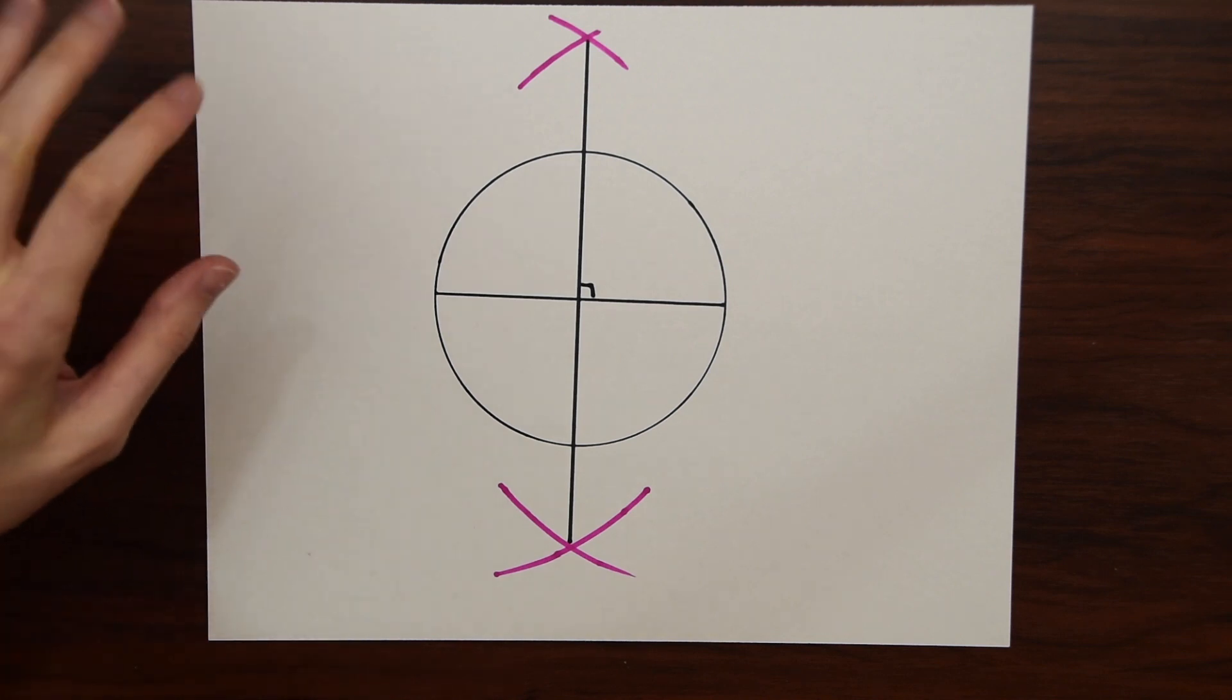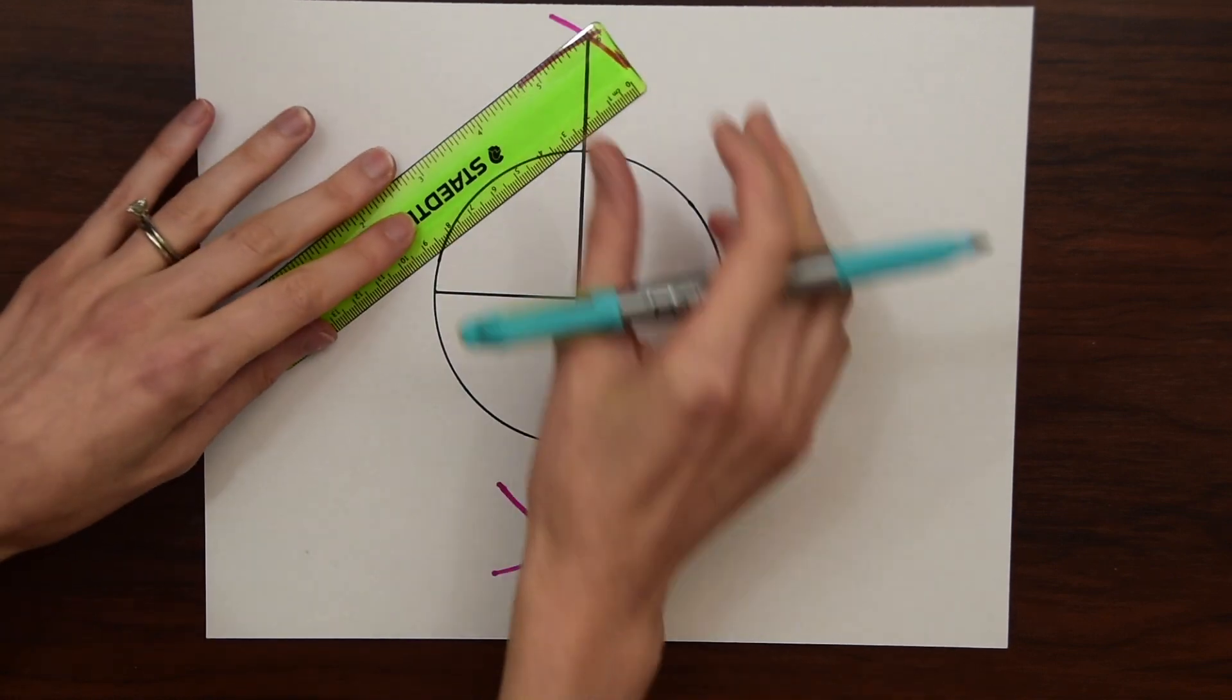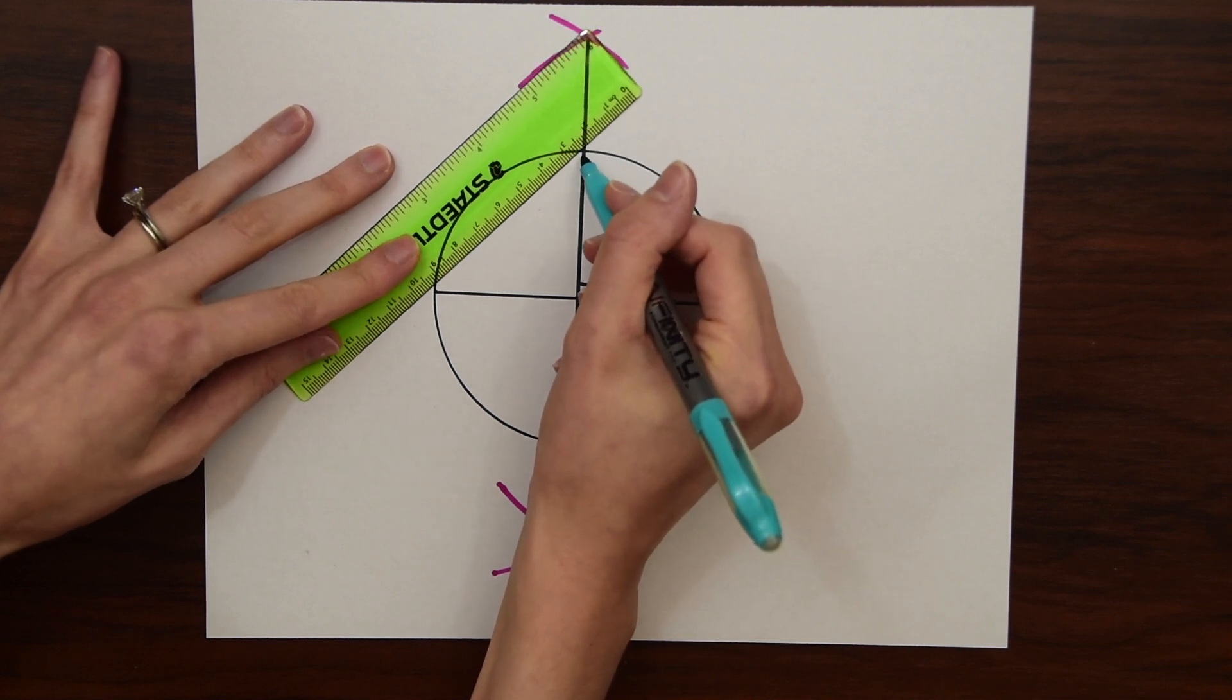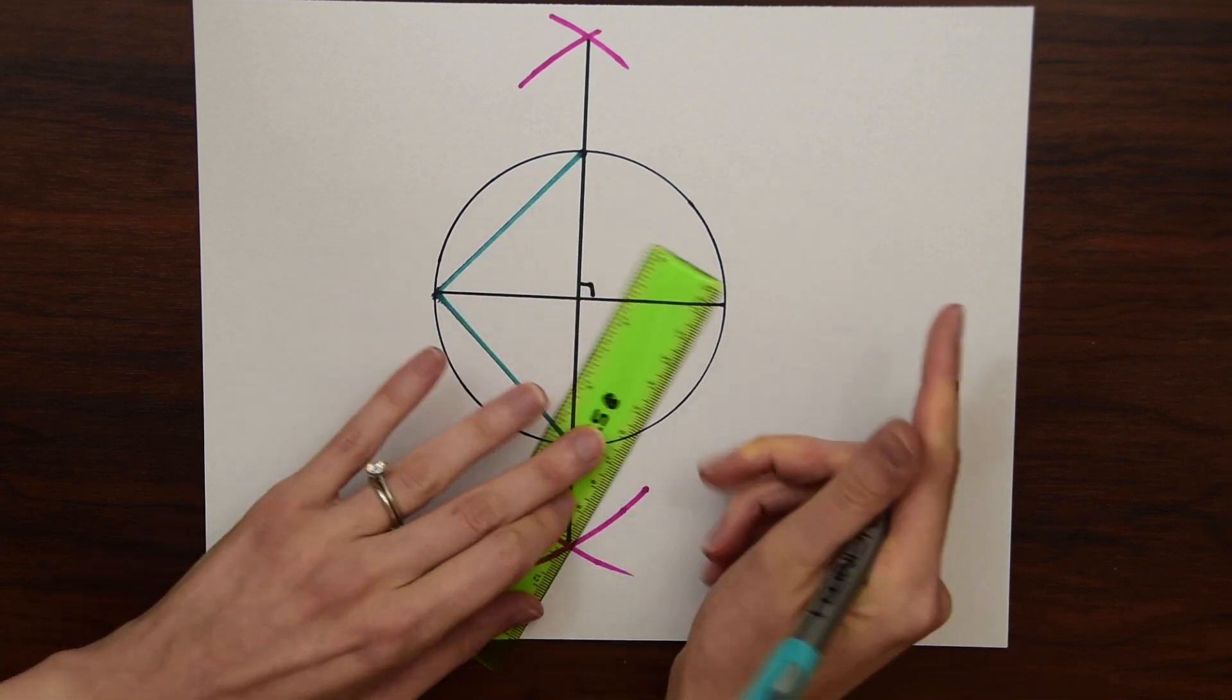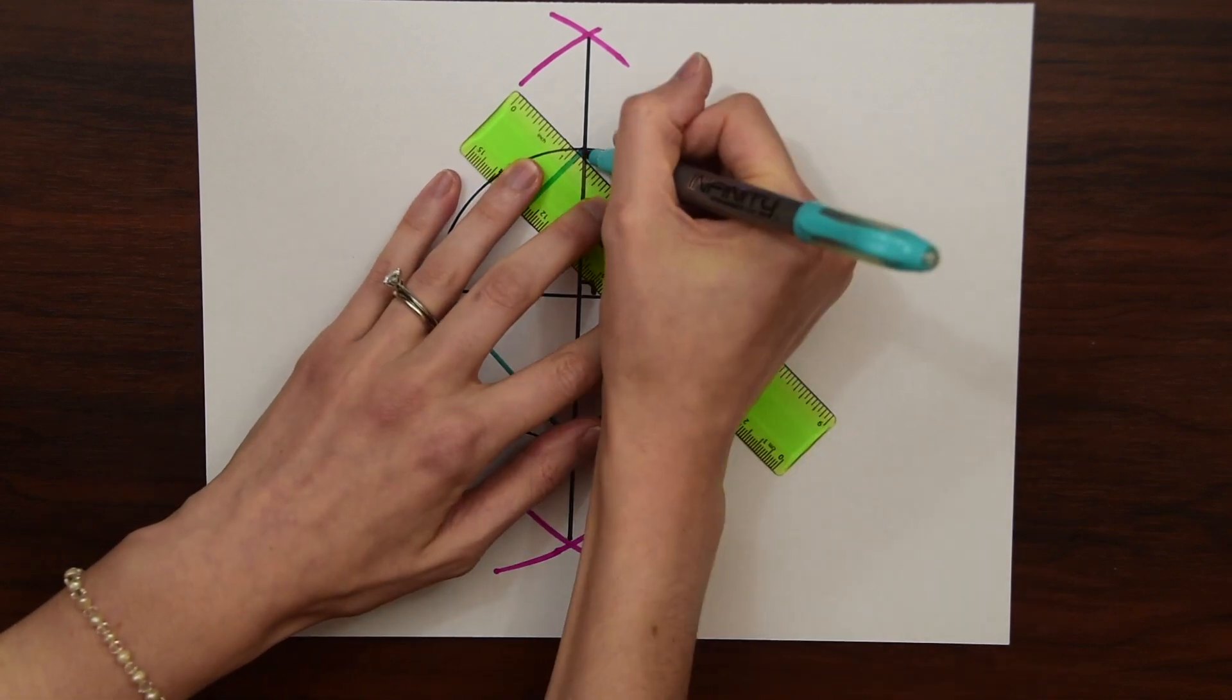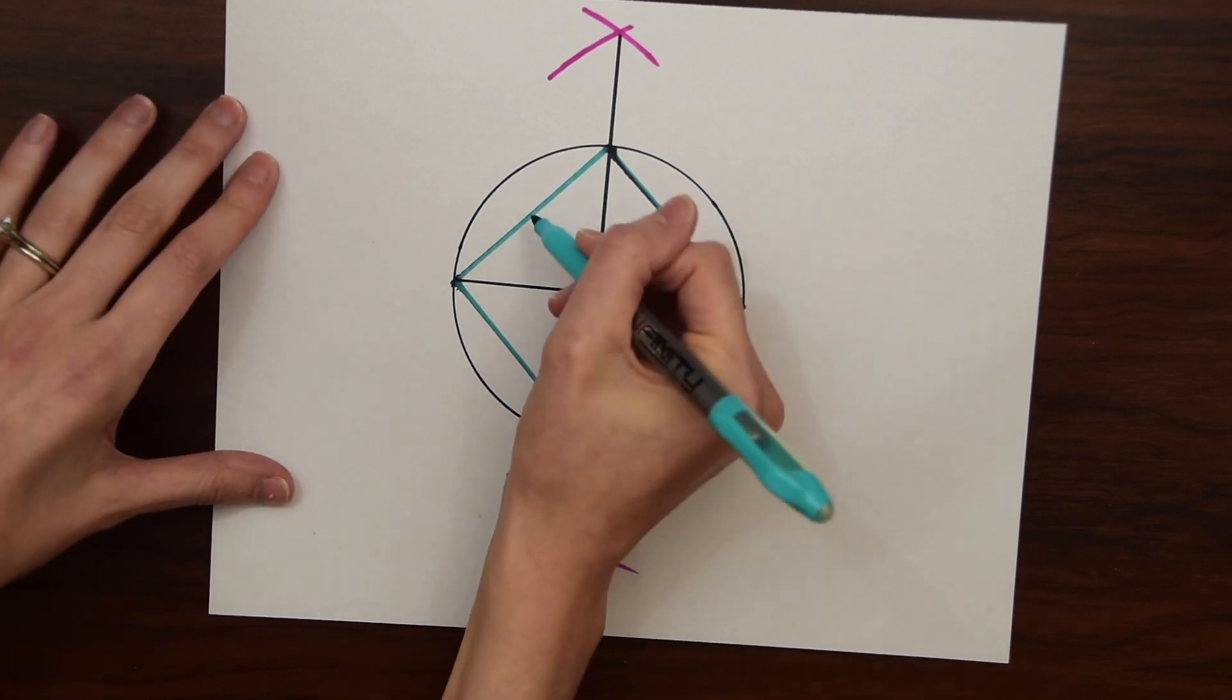So now we're at our last step. We're just gonna connect each point to each other forming a square because now we know that they're equidistant since we formed this perpendicular bisector. So we take out a ruler and do this all the way around and there we have our square inscribed in a circle with all equal sides.